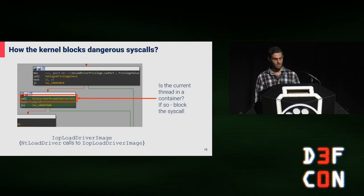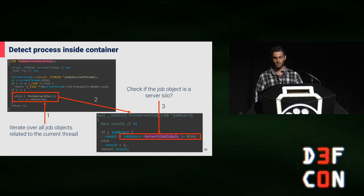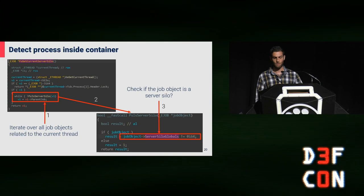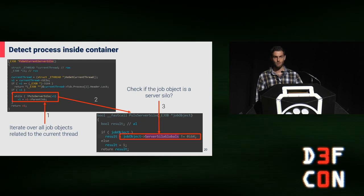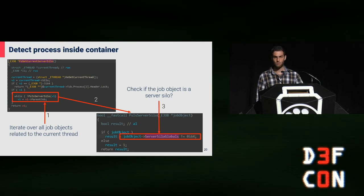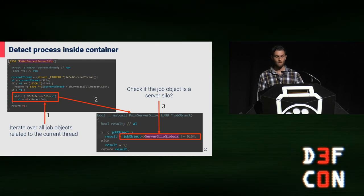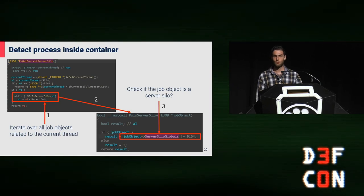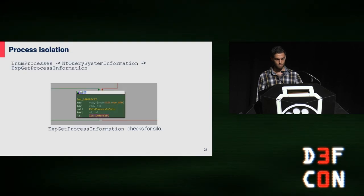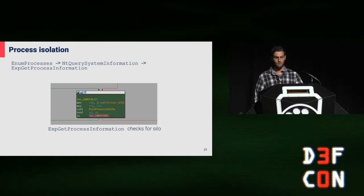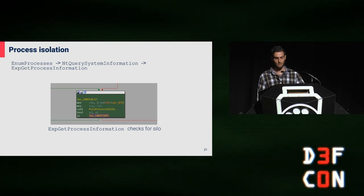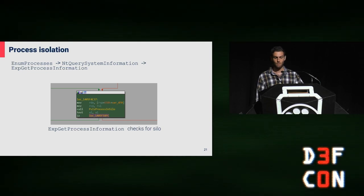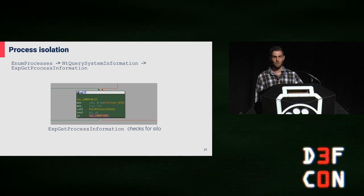When the kernel needs to detect that the current process is isolated as a container, it checks for a server silo or silo in the ETHREAD or EPROCESS structs, which are the structs that represent the process and threads. The kernel needs to check all the objects attached to the thread or the process, because it is possible to attach multiple job objects to a single thread or process struct. Another example of a flow requiring this validation is the process list flow — the kernel just skips the processes that are outside of the container, so when a process inside queries for all process lists, it gets only those inside the container.